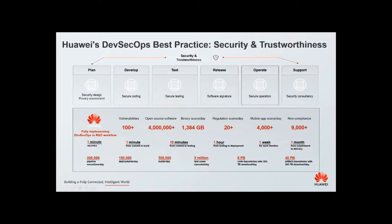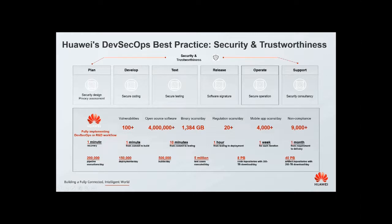We also have binary scans per day and mobile app scans. The time each phase costs in the DevSecOps workflow: from failure to recovery takes only one minute; from code commit to build takes one minute; from code commit to testing takes 10 minutes; from testing to deployment takes one hour. Each iteration cycle takes around one week, and from requirements to final feature delivery takes around one month. We also have 200,000 pipeline executions per day and 500,000 builds per day — our R&D scale is very powerful.